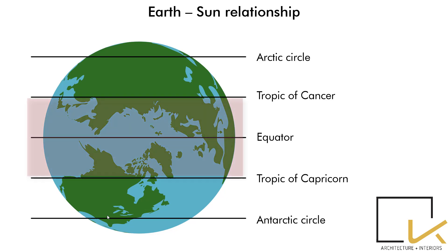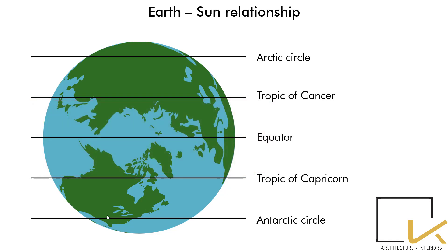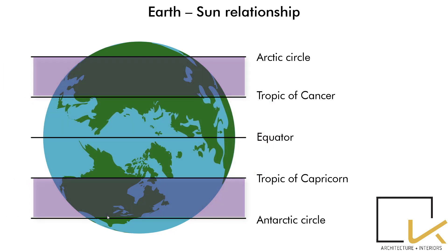The zone between the two tropics is known as the Torrid Zone because of its high temperatures. The zone between the tropics and the Arctic-Antarctic Circle is known as the Temperate Zones.